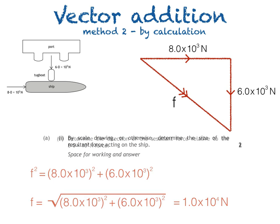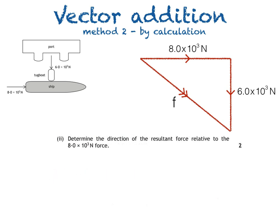To find the direction, we use trigonometry. Remember, it's this angle we need to find, since it's the one at the beginning of our vector diagram. It allows us to find the direction relative to the 8.0 × 10³ N force.